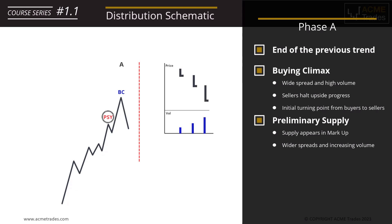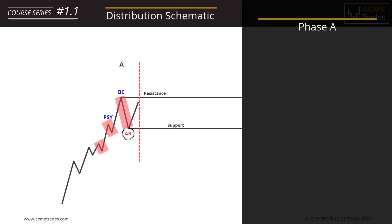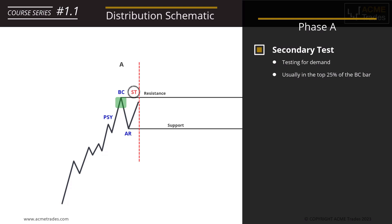This would be the buying climax, and then we have AR — an automatic reaction. Within accumulation it's known as the automatic rally. The automatic reaction should, but not always, produce a meaningful move to the downside — ideally the best reaction since the uptrend began. Then finally we have ST — the secondary test — which tests demand in the highs via the buying climax high, usually around the top 25% of the buying climax bar. We want to see narrow spreads with low volume in this area, showing poor demand and a lack of buying force.